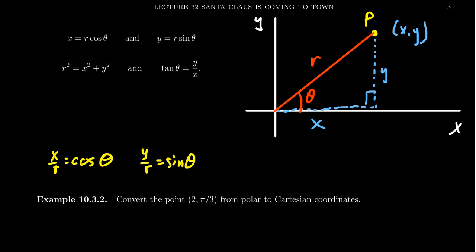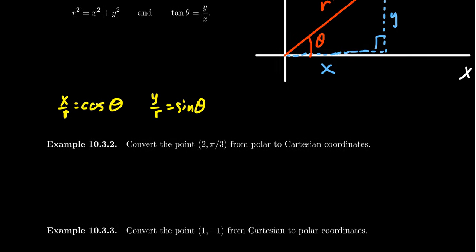If we pause there for a moment, this actually gives us a way of converting from polar coordinates. If you know r and theta, we can convert those into Cartesian coordinates x and y. The right hand side only depends on r and theta, so you can compute an x and you can compute a y. This is just trigonometry here.